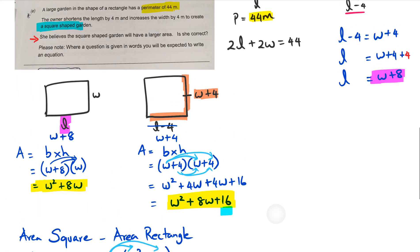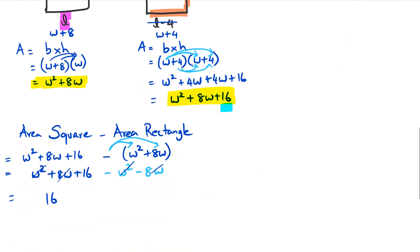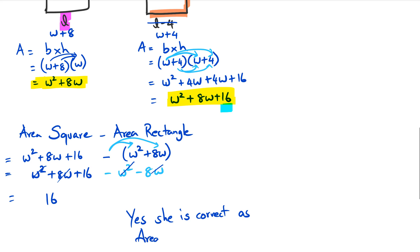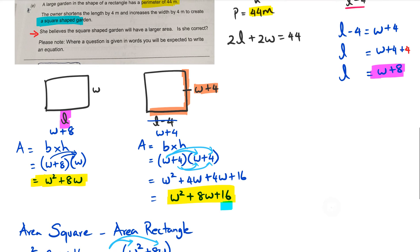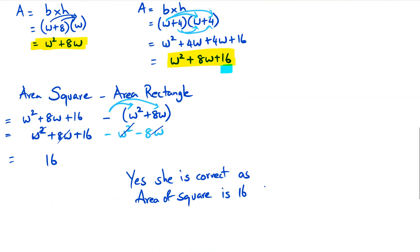So going back to the question: she believes the square-shaped garden will have a larger area — yes, she is correct. The area of the square is 16 meters squared more than the area of the rectangle.